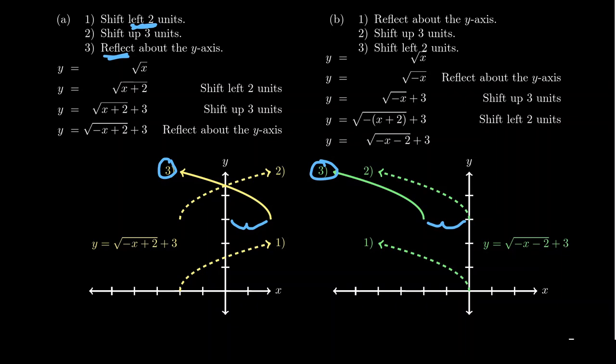And so changing the order of operations does affect the outcome on the graph in this way. Now, why is it a shift up in both situations? Well, it turns out that a horizontal reflection, reflecting across the y-axis is a horizontal reflection because you're going to replace the x with a negative x inside of the horizontal zone. And thus, horizontal transformations don't affect vertical transformations, and vertical transformations don't affect horizontal transformations. They are independent of each other.